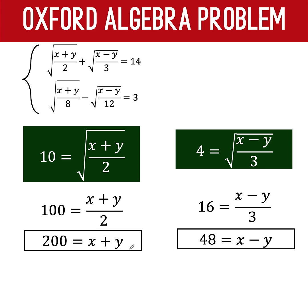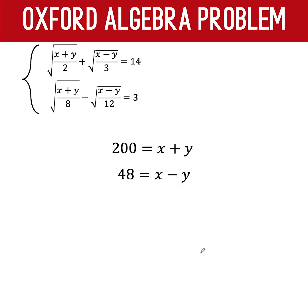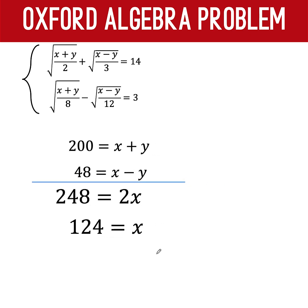Again, we have here a system of equations in two unknowns that we can solve again by elimination method. So, we add these two equations to arrive at 200 plus 48 equals 248. x plus x is 2x. y plus negative y is 0. So, we did not write the variable y anymore. And solving for x, x is 248 over 2. Or x is equal to 124.